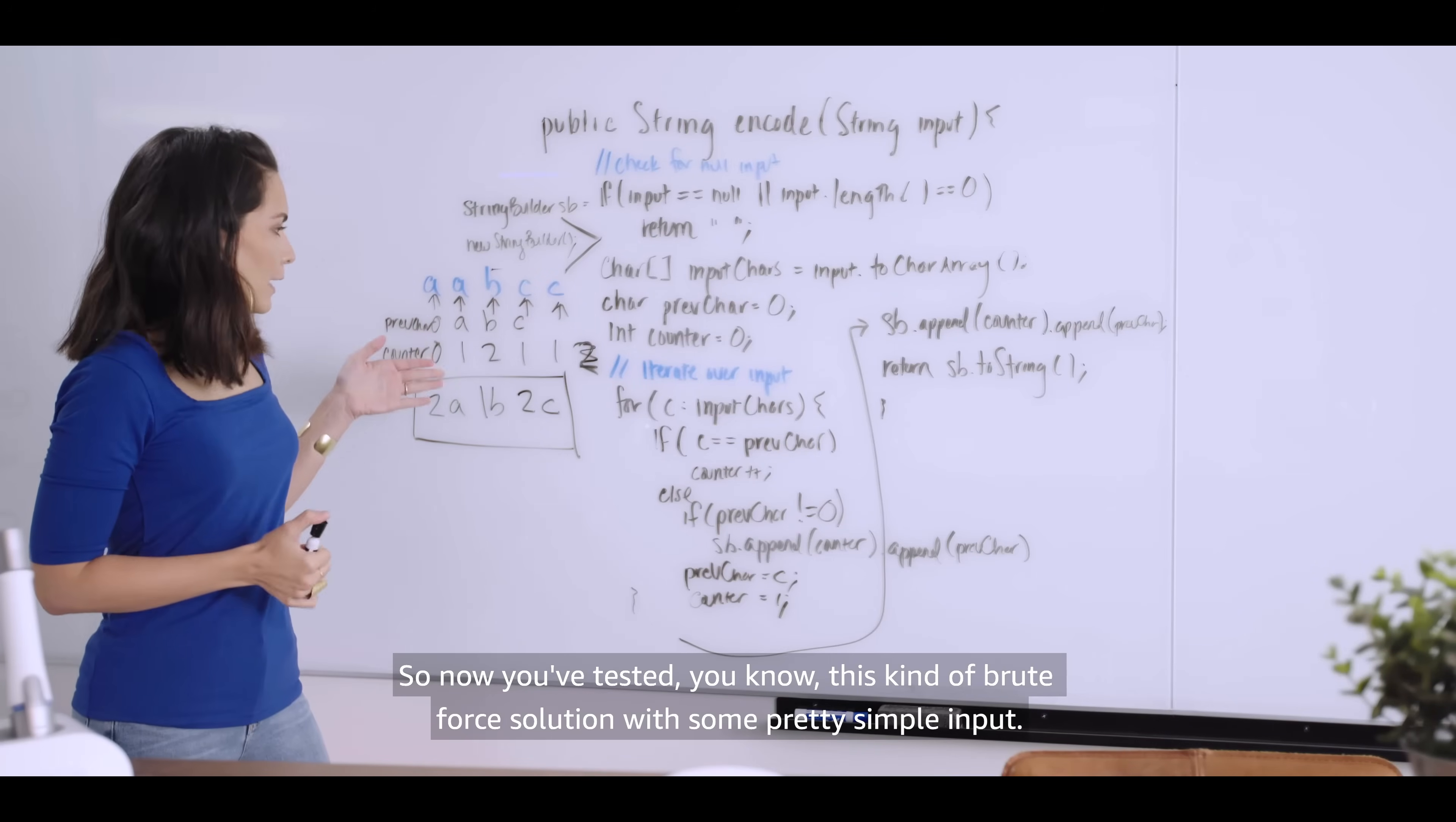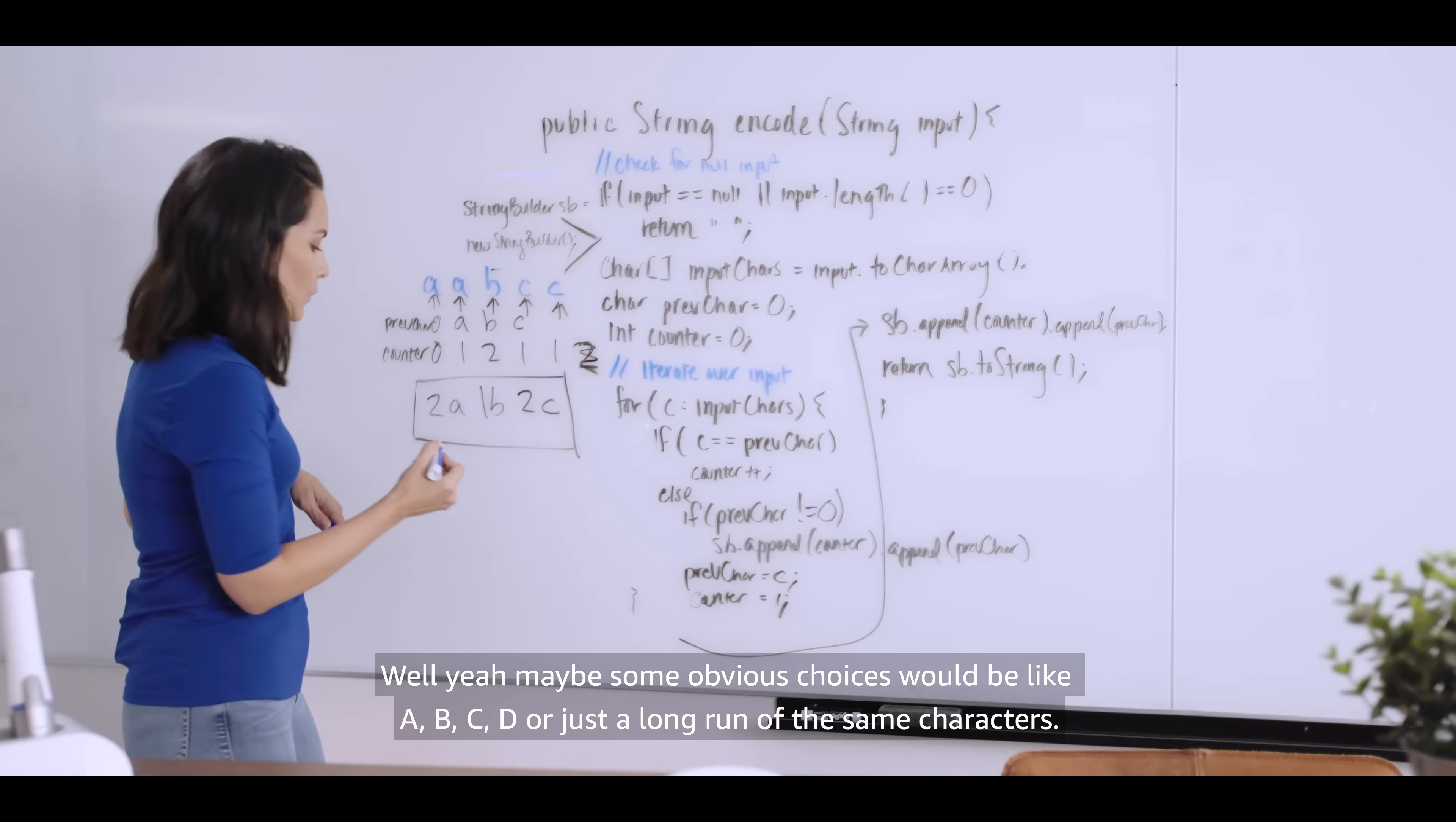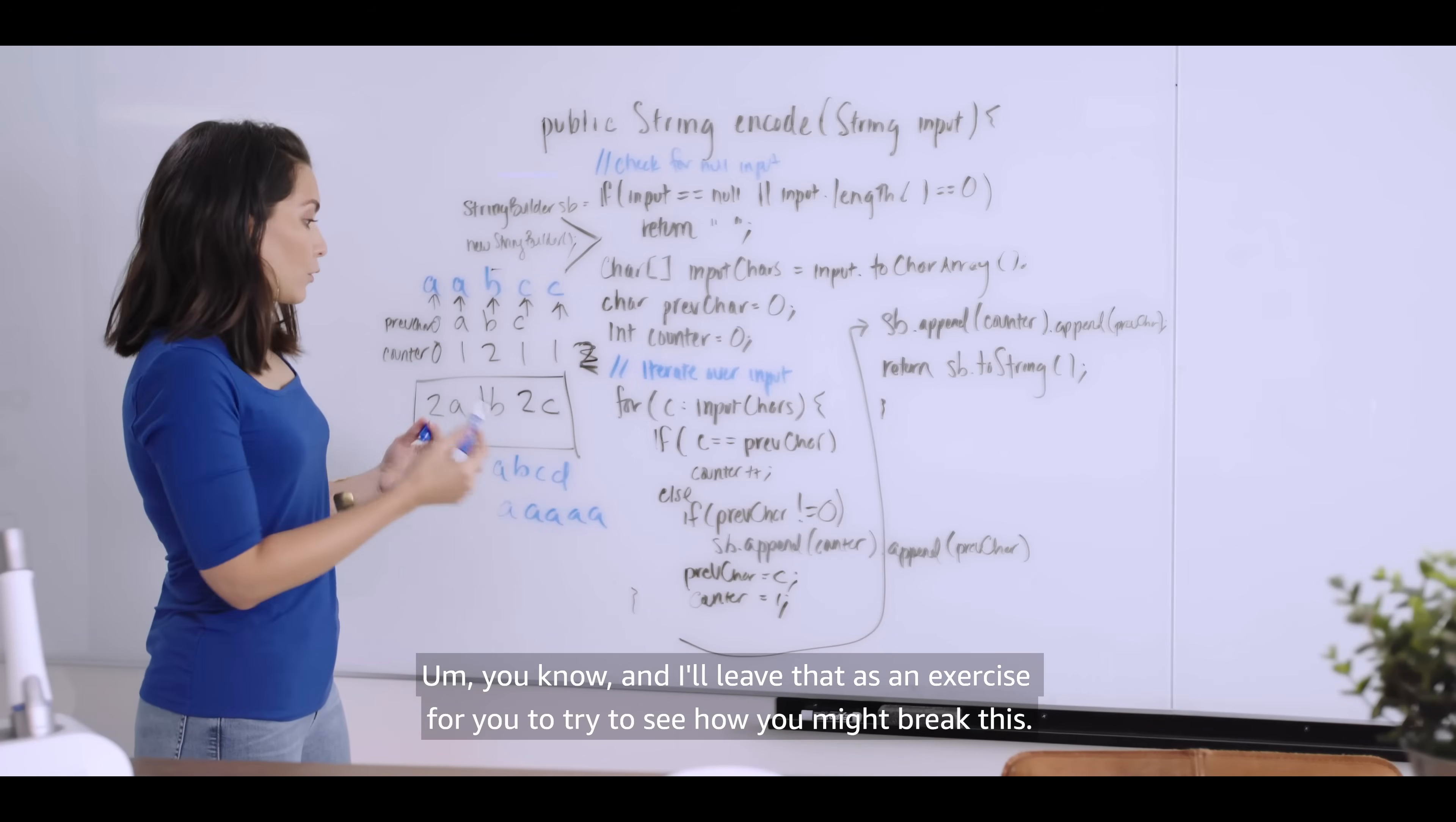So now you've tested this kind of brute force solution with some pretty simple input. What a good practice is next is to start thinking about what kinds of input might break this. Well, maybe some obvious choices would be like A, B, C, D, or just a long run of the same characters. And I'll leave that as an exercise for you to try to see how you might break this.